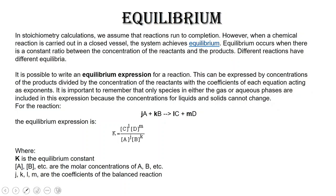Different reactions are going to have different equilibria. That means that once equilibrium is formed, there are going to be different concentrations of products versus reactants, depending on the system. We write equilibrium expressions for a reaction to help us determine whether a reaction will rather go forward or whether it will rather go in the reverse.